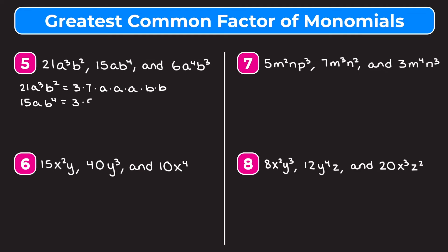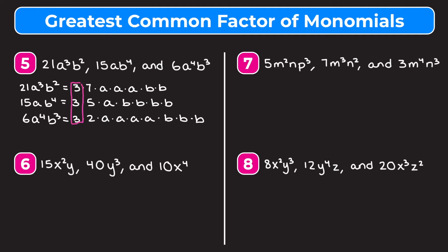For 15ab to the fourth: 15 is 3 times 5, a is just itself, b to the fourth is four b's. For 6a to the fourth b to the third: 6 is 3 times 2, a to the fourth is four a's, b to the third is three b's. Looking at what all three have in common: one 3, one a, and two b's.